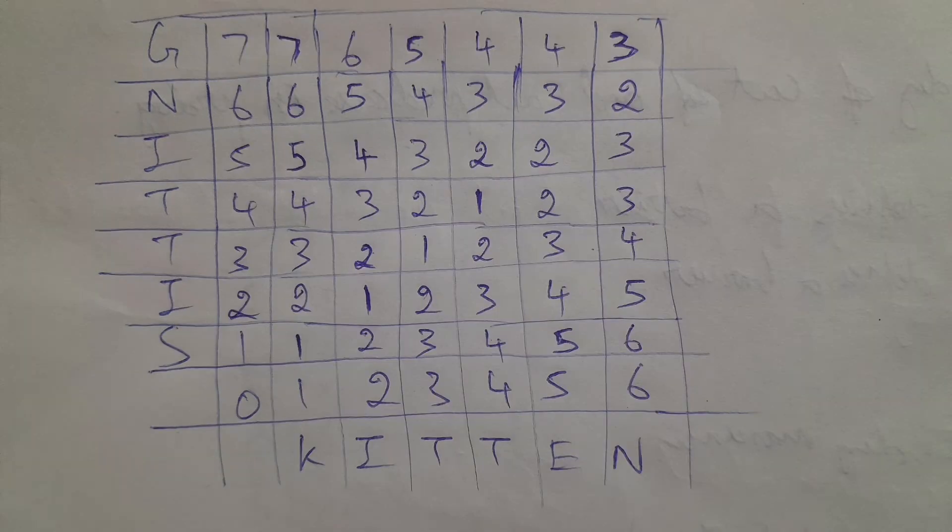Now we check if both letters are the same or not. If both letters are not the same, we fill the cell by comparing those three values, finding the minimum, and adding one to it. For s and k, there are 1, 0, 1. Among these, 0 is the minimum, so we add 1 and assign 1 to that cell. For s and i, comparing 1, 1, 2, the minimum is 1, so we add 1 and get 2.